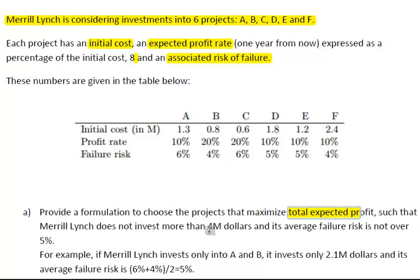For example, if we are working on two projects A and B, the failure risk of project A is six percent, the risk of failure of project B is four percent, so on average five percent. If you consider the risk of A, the risk of F, and let's say the risk of D, that would be six percent, five percent, and four percent, so that would be also five percent on average.